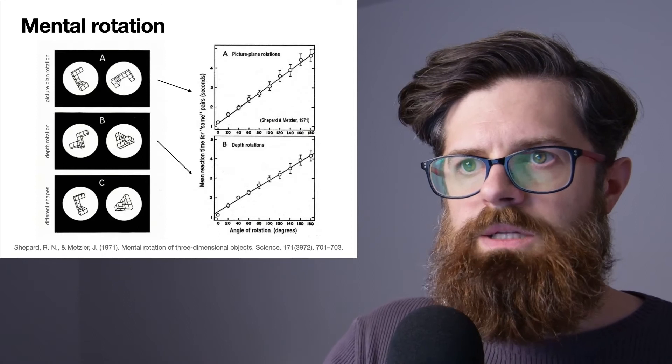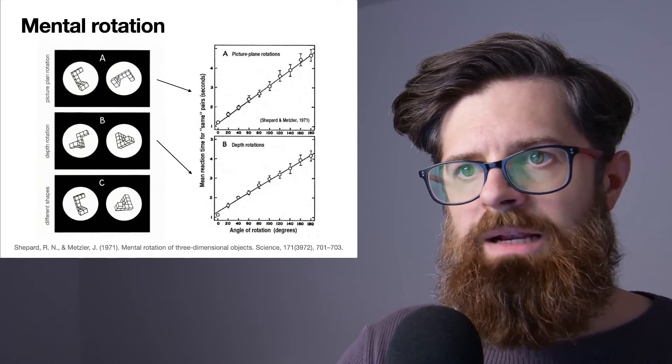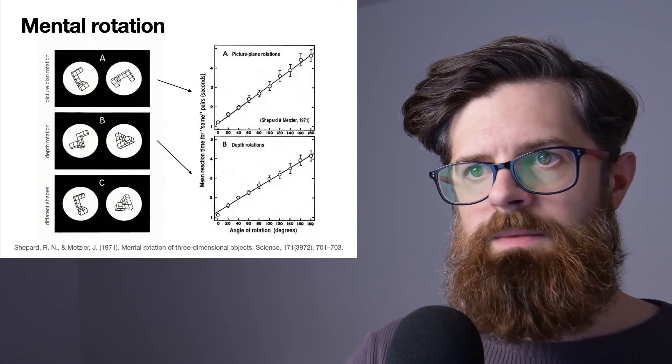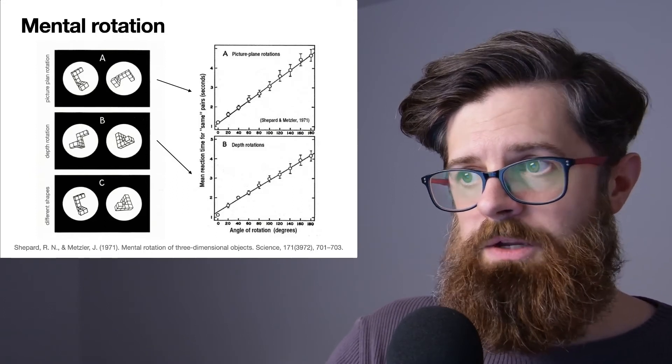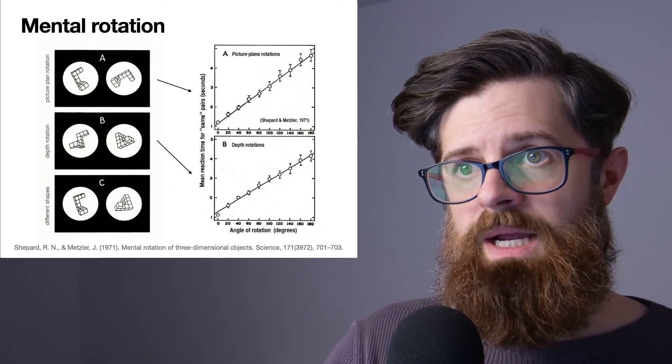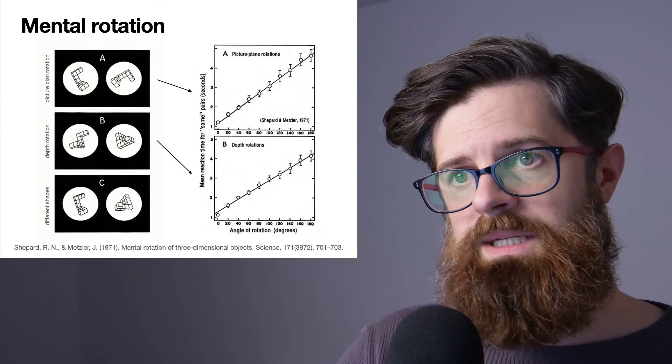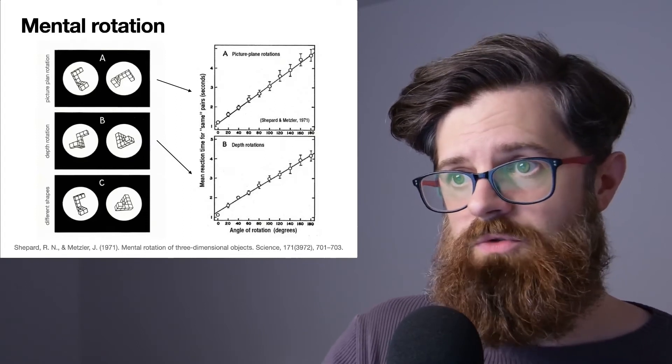The x-axis represents the angle of rotation in degrees. If it's zero, then you're basically looking at the same object. If it's 180, then that's rotated 180 degrees.